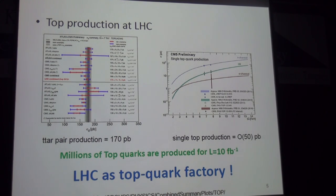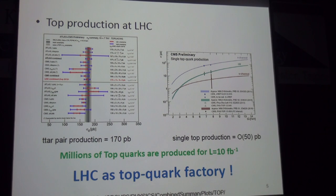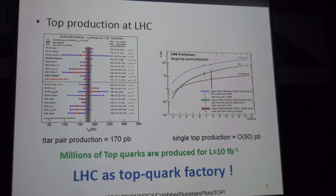Let me show you the typical measured cross-section for top quark pair production at the LHC, which is about 170 picobarns. On the other hand, for single top quark production, the typical size is about 50 to 100 picobarns. If you assume a luminosity of, for example, 10 inverse femtobarns and multiply these two numbers, you get an expected number of events on the order of millions. We can consider the LHC as a top quark factory, so it is interesting to study the top quark at the LHC.